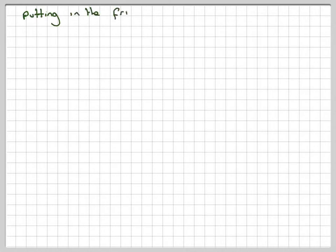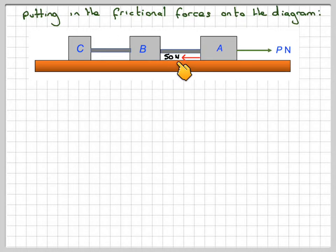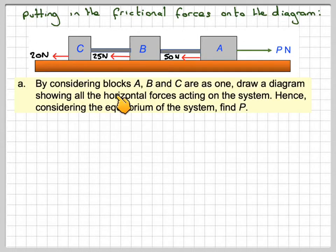So we've put in the frictional forces onto the diagram. Here's our original diagram. For A, friction is acting against the direction of the force because the direction of movement will be this way, and it will be 50 newtons. For B it's 25 newtons and C is 20 newtons. So, by considering blocks A, B, C as one,